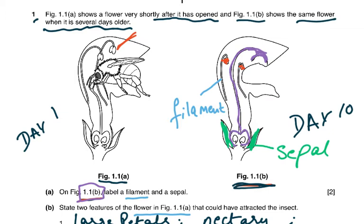Everybody should know: sepals protect the flower in the bud stage. Anthers produce pollen. The filament holds up the anthers so that when the anthers burst, the pollen is dispersed either by wind or by insects. The stigma receives the pollen.